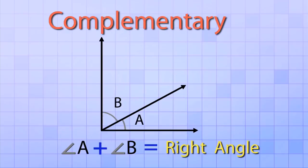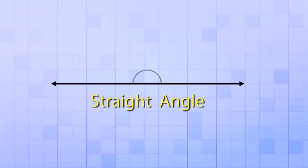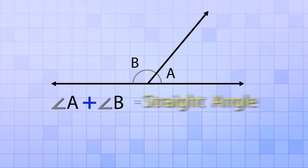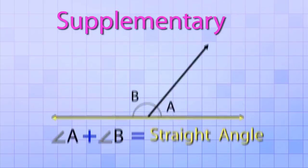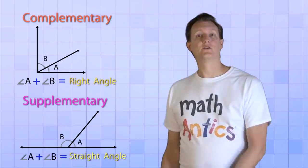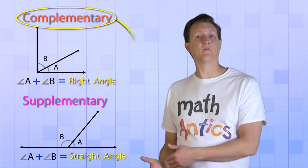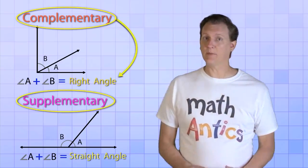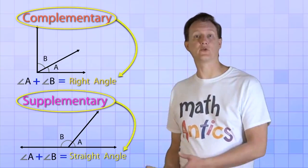And we can do the same thing with a straight angle. If we take a straight angle made from two rays and divide it with a third ray, two new smaller angles are formed. And those two angles combine to form a straight angle. We call these angles supplementary angles. So complementary angles combine to form a right angle. And supplementary angles combine to form a straight angle.